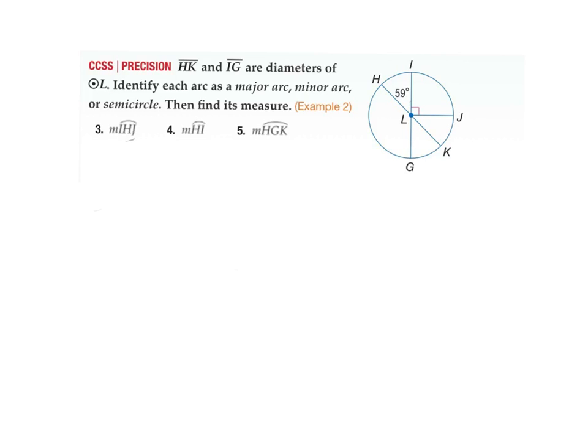So here's example two and question number three. We're going from I through H to J. So I through H to J is all of this. So we started at this point and going to J. Well, obviously, it's greater than 180 degrees. So it's a major.